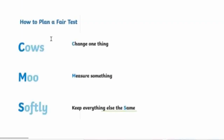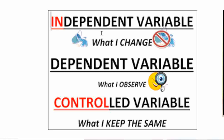Now we have to plan the experiment so it will be a fair test and the results will be reliable. Remember this: 'Cows Move Softly.' C is for change one thing only at a time. M is for measure something. S is for keep everything else the same — that will be the control variable. Based on that, the independent variable is what we change, the dependent variable is what we observe, and the control variable is what we keep the same.